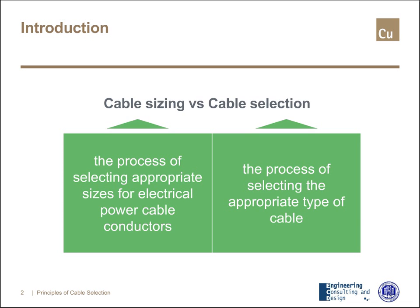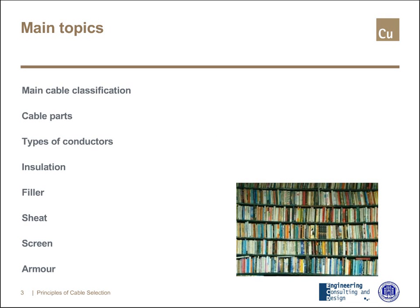Let me repeat: the type of the cable. Indeed, for cables as well as for any other kind of equipment, to select properly something, we have to know deeply what we are selecting. Today we will start from the main cable classification, moving to main cable parts, and then additional details on type of conductors, kind of insulations, filler, sheet, screens, and armor. For all of them, we will try to put in evidence the limits, the possibilities offered by technologies, and the pros.